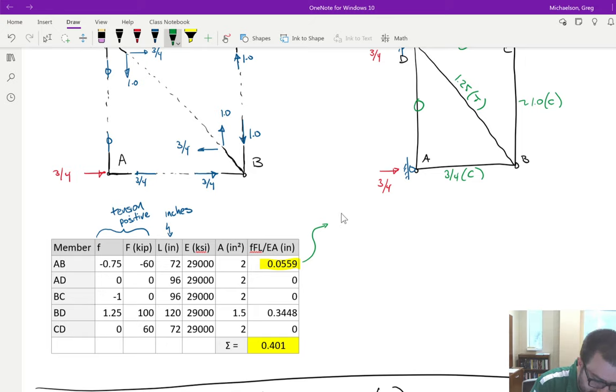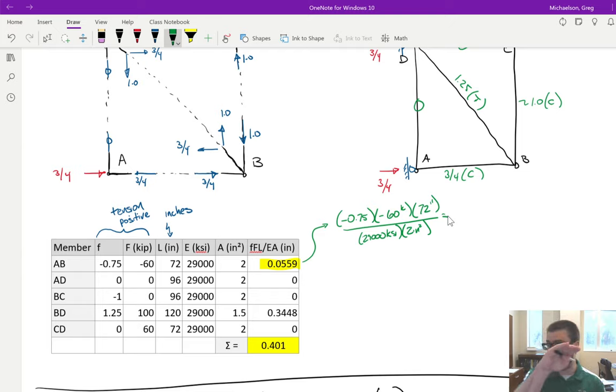So that's negative 0.75, negative 60 kips, 72 inches, all over 29,000 KSI, and then 2 square inches. So if you plug and chug that, just little f, big F, L, divided by EA for that row, you're going to get 0.0559, and the units are inches. You do that for each row.